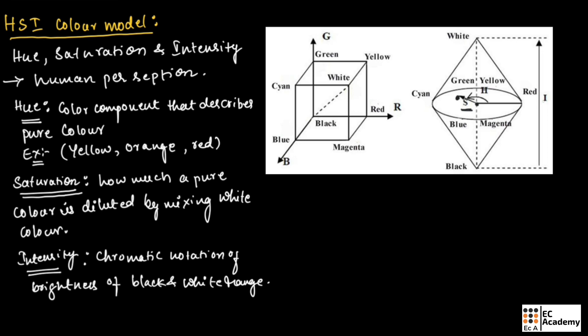We can represent hue by a formula as θ if blue is less than or equal to green, and hue equals 360 degrees minus θ if blue is greater than green. Here θ equals 1/2 times [(R-G) + (R-B)] divided by [(R-G)² + (R-B)(G-B)]^(1/2).